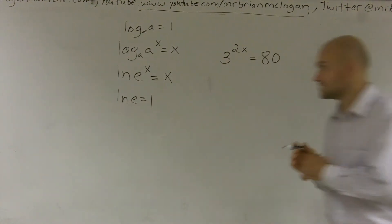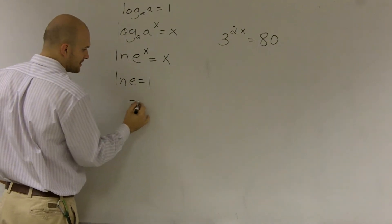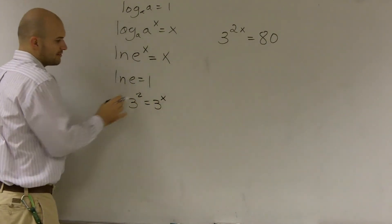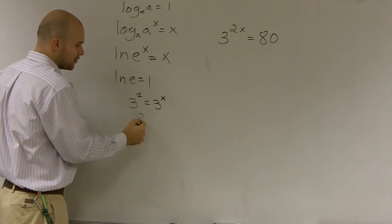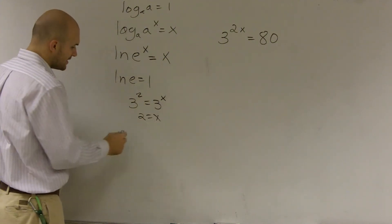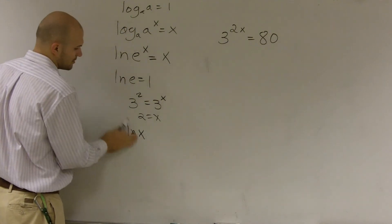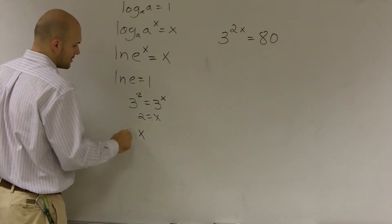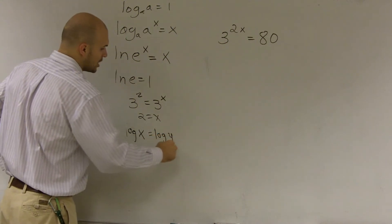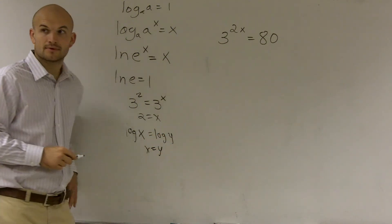The next thing is also the one-to-one property. If we have 3 squared equals 3 to the x, then we know that 2 has to equal x. And that is also true for logarithms — if log of x equals log of y, then x has to equal y.